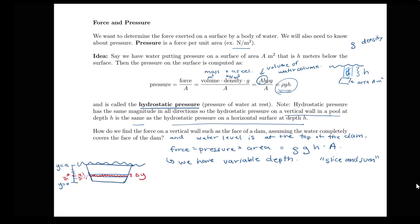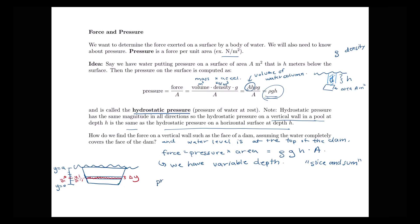Let's write down the pressure on the i-th strip. The pressure equals density times gravity times depth. If we're at position y_i* and the water surface is at y = a, then the depth there is h_i = a − y_i*.